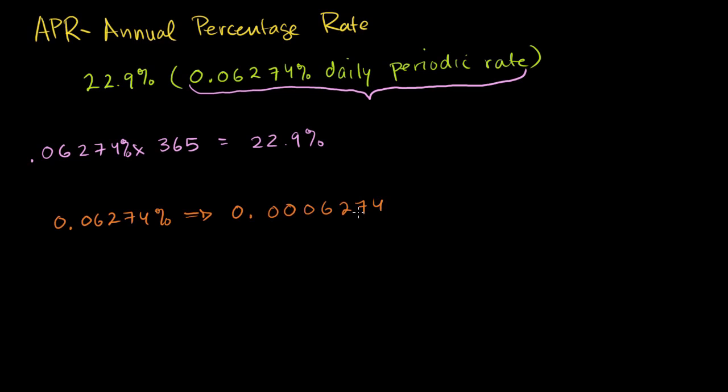This is how much they're charging every day. To figure out total interest over a year, you take this number and add it to 1: 1.0006274. Instead of multiplying by 365, you take it to the 365th power—multiply it by itself 365 times. If I have $1 in my balance, on day two I'll owe 1.0006274 times that dollar.